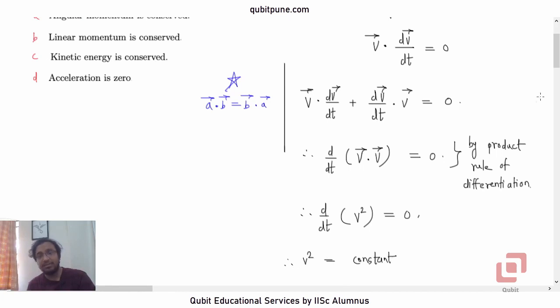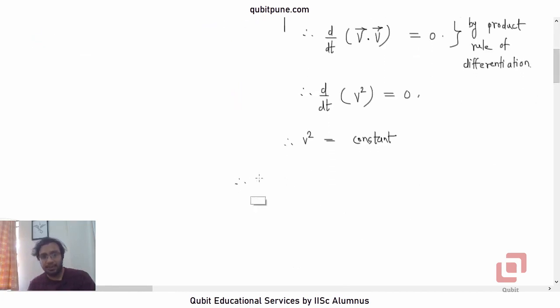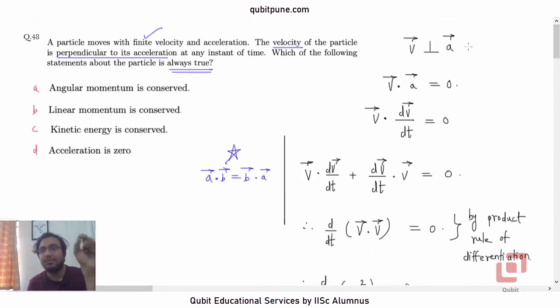Now, if V squared is constant, we can divide this by two, multiply this by the mass of the particle, MV squared equal to constant. So what is the conclusion that we have got based on the single given piece of information that velocity is finite and it is perpendicular to acceleration. And the result is that kinetic energy is conserved.